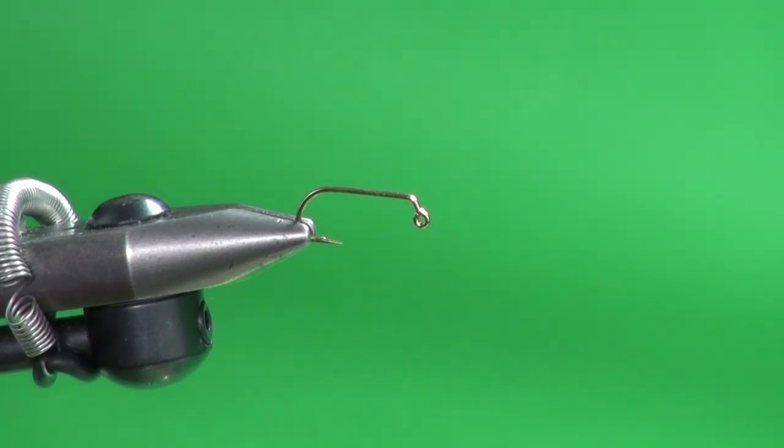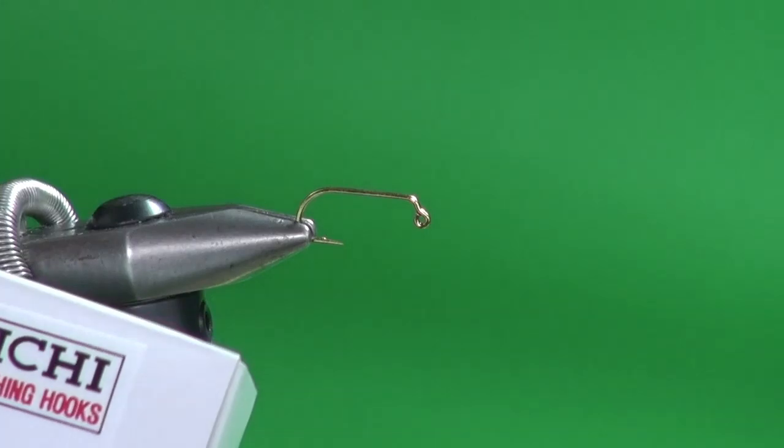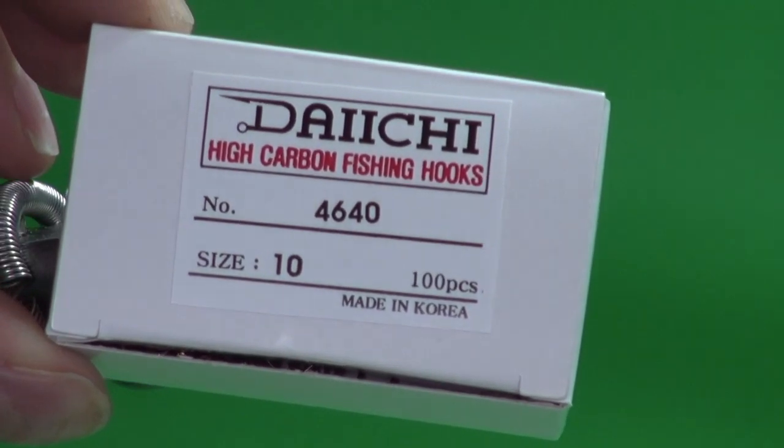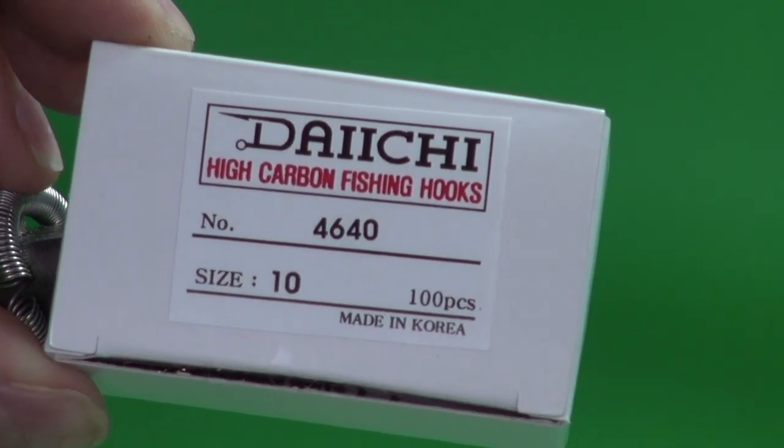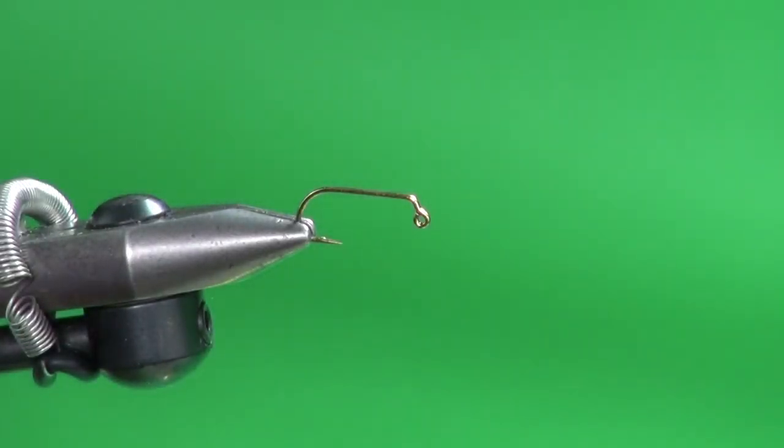Alright, so we're going to tie a balanced minnow and this fly has already appeared on my channel in the fathead minnow configuration, kind of an olive coloration. This is the all-white version I call white satin. And into the jaws of the vise I've got the Daiichi jake hook, a 4640 number 10. These 4640s are available in 10s, 8s, and 6s, so we can try some bigger minnows. But this imitates a small little white minnow. White is always a good starting point.